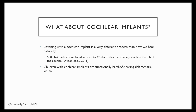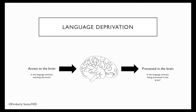Therefore, it is so important to remember, as Mark Marshark puts it, that children with cochlear implants are functionally hard of hearing. When we think about hearing aids, we must ask: is the language stimulus reaching the brain? When we talk about cochlear implants, we must also ask: is the language stimulus being processed in the brain? If the answer to either of these questions is no or unsure, then we have a high risk for language deprivation.